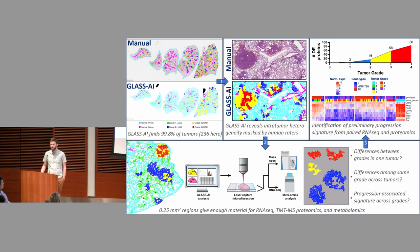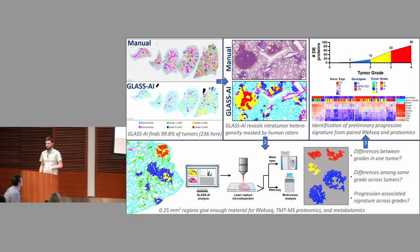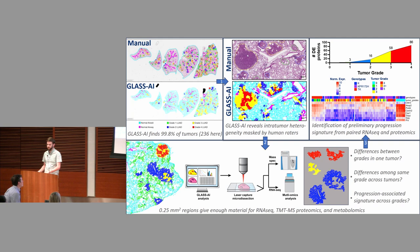GLASS-AI grades the whole slide like a pathologist does, but in 30 minutes on a desktop computer. It can find 99.8% of tumors that a human can. Because GLASS-AI grades at pixel-level resolution, we can uncover intratumor heterogeneity that human annotation masks — important for ensuring patients get the most appropriate treatment targeting the most aggressive part of their tumor. Manual annotations color each tumor with one color, whereas GLASS-AI shows large regions of grade three and grade four within a single tumor. We've used this to study how loss of p53 tumor suppressive activity affects tumor progression.